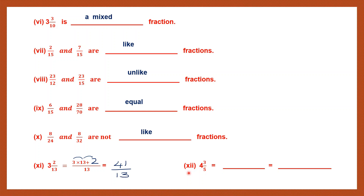Question 12: We follow the same pattern given in question 11. So, 4, 3 by 5 equals 5 into 4 plus 3, and the denominator is 5. 5 fours are 20. 20 plus 3 is 23, and the denominator is 5. So, the final answer is 23 by 5.